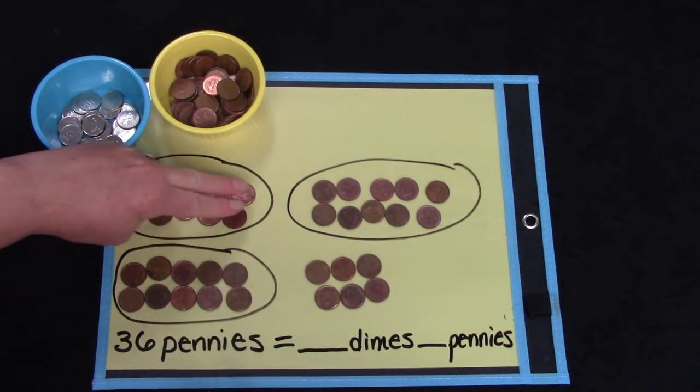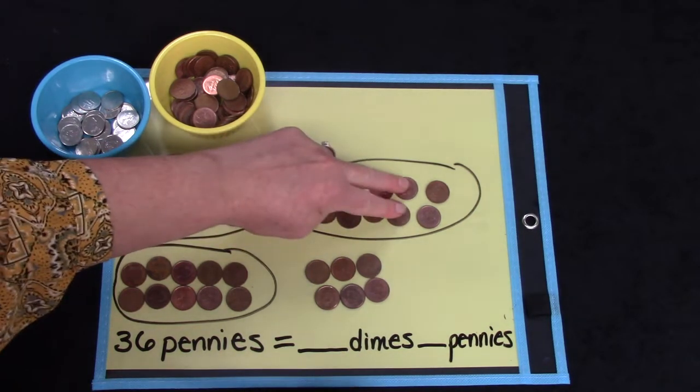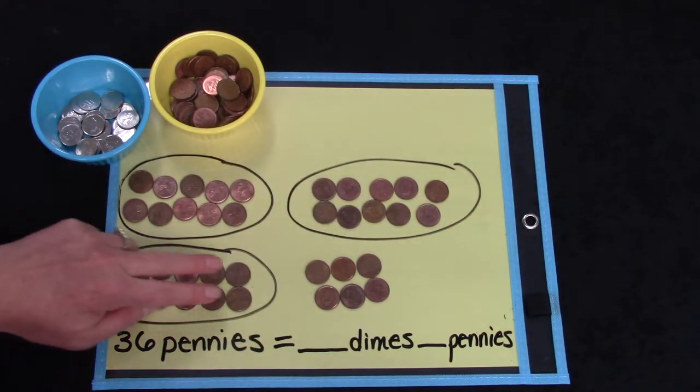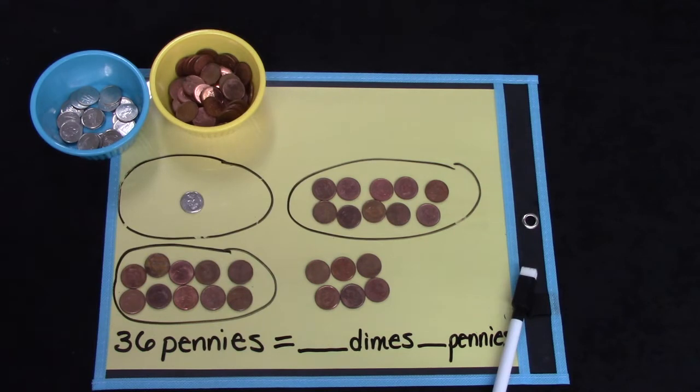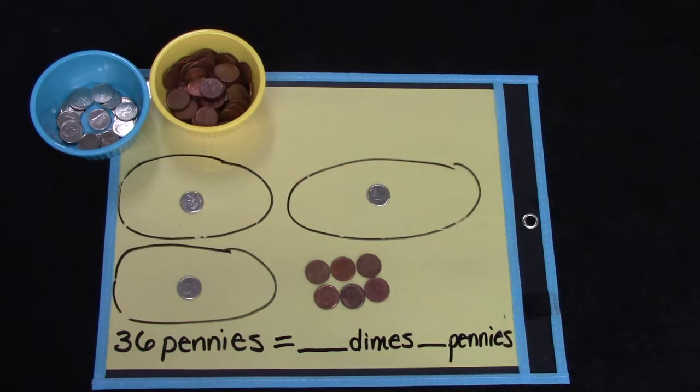2, 4, 6, 8, 10. 2, 4, 6, 8, 10. 2, 4, 6, 8, 10. 1, 2, 3. I have 3 dimes.